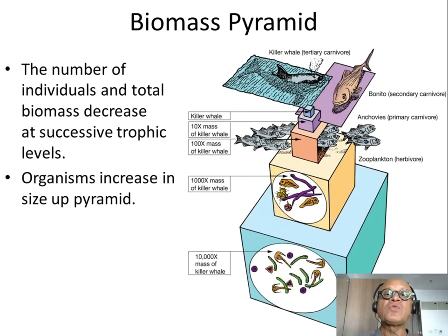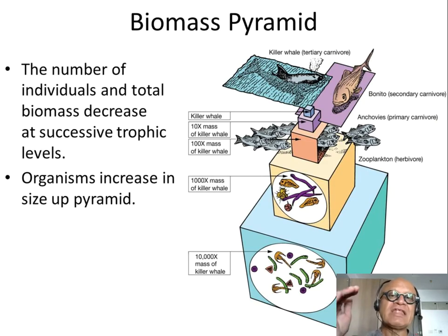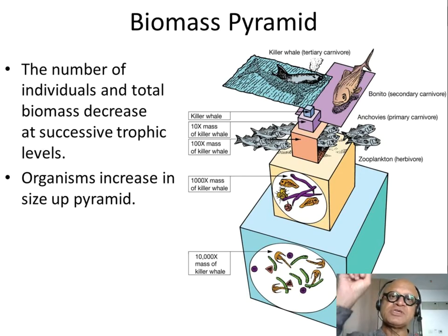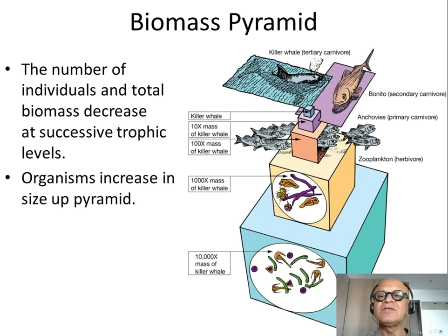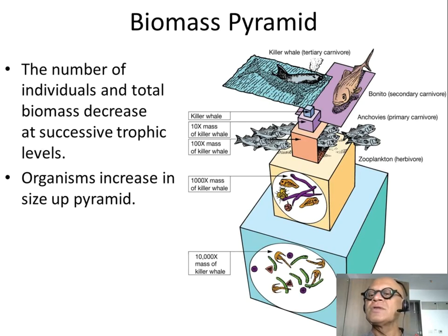Let's look at energy transfer in terms of biomass. The number of individuals and total biomass decrease as we go up the trophic levels. Tracing from a top predator down to the primary producer: a killer whale is a tertiary carnivore, which eats secondary carnivores like bonito, which eat primary carnivores like anchovies, which eat zooplankton (herbivores), which feed on phytoplankton at the base.